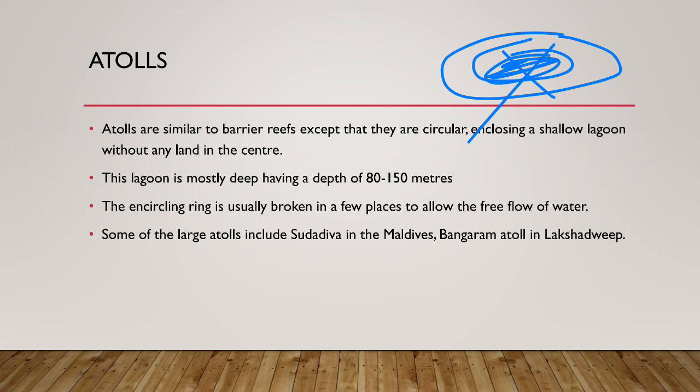The lagoon of an atoll is mostly deep, having a depth of 80 to 150 meters. The encircling ring is usually broken in a few places to allow free flow of water. Some of the large atolls include Suadiva in Maldives and Bangaram Atoll in Lakshadweep.